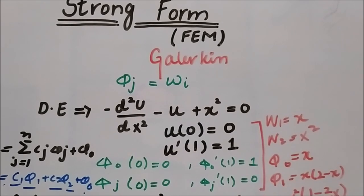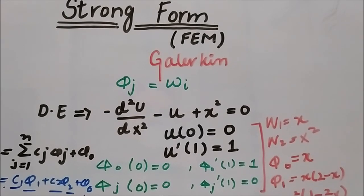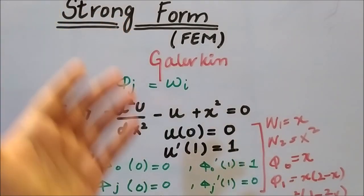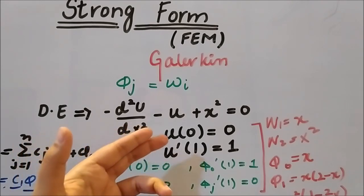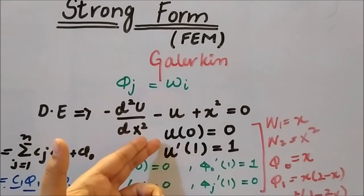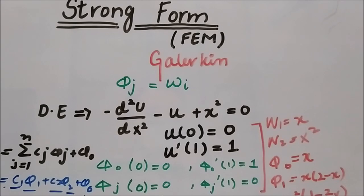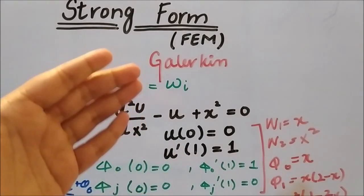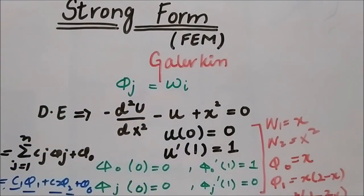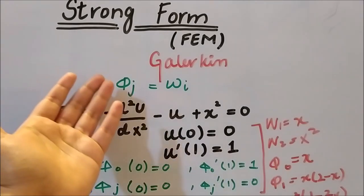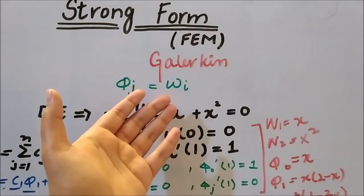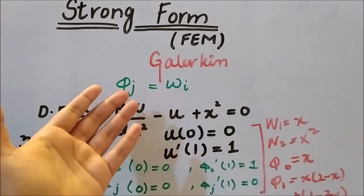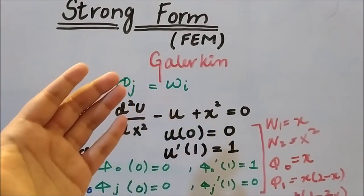Hello everyone, this is D.A. from e-Academy. Today we are going to talk about the Galerkin method and how we can solve the same differential equation with the same boundary conditions as the previous video. In the previous video we talked about the Petrov-Galerkin method, which assumes that the shape function is not equal to the weight function. In the Galerkin method, the assumption is that the weight function and the shape functions are equal.